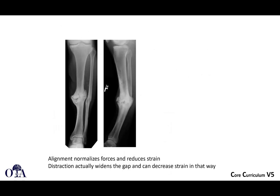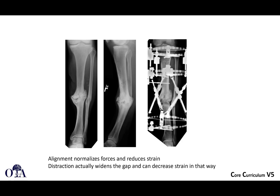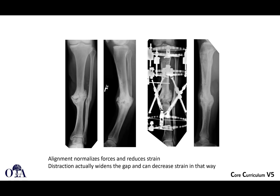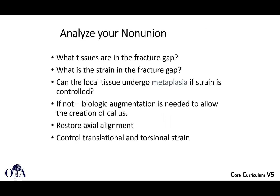Alignment also helps to normalize forces and reduce strain. Distraction to some extent actually widens the gap, and if you think about it, can decrease strain in that way. You have to think about how realignment affects shear strain. Ultimately, when presented with a non-union, ask: what tissues are in the fracture gap, what is the strain there, can local tissue undergo metaplasia if strain is controlled, and if not, is biologic augmentation like bone grafting needed?